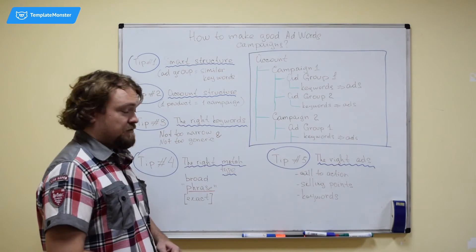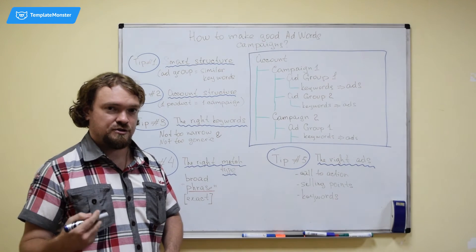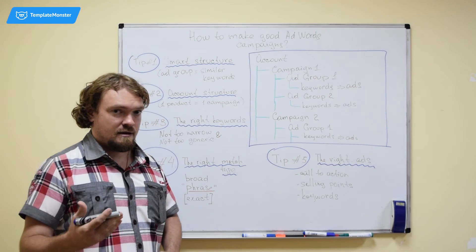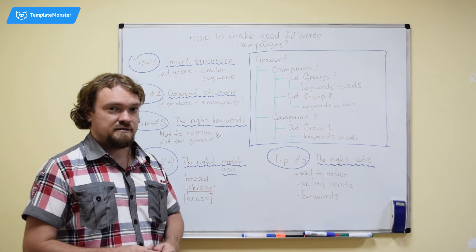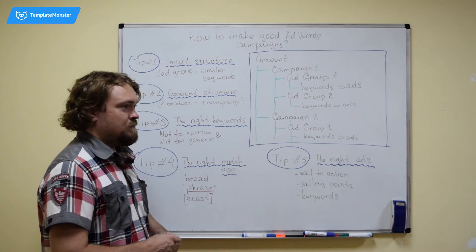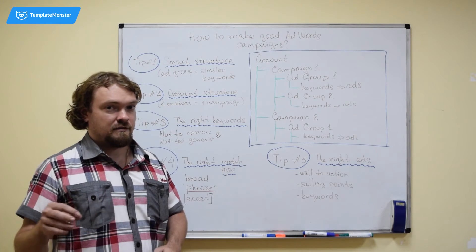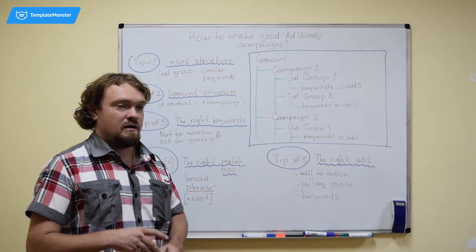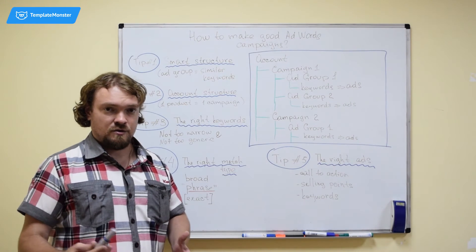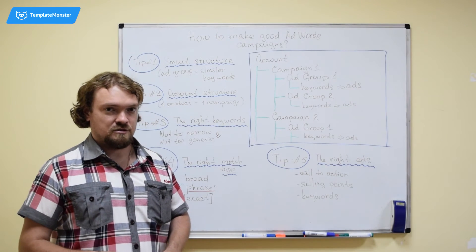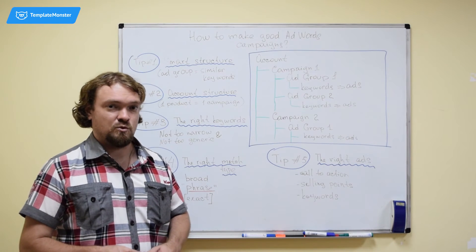The next is the phrase match type. This means that the ad will be triggered by searches that contain the keyword. With the previous example of photography equipment, the ad will show up for searches like buy photography equipment or photography equipment reviews, etc. So, something that contains your keywords or its close variation. So, that's already better, right? It makes the search more relevant for you.